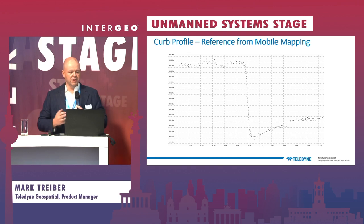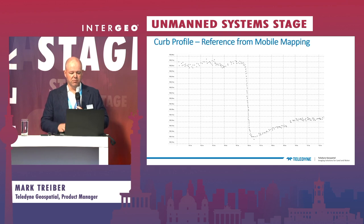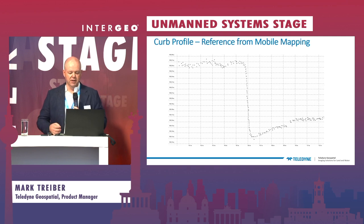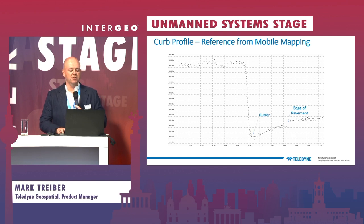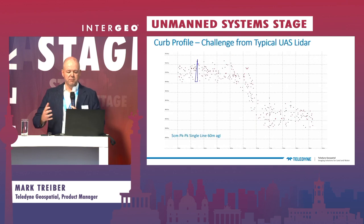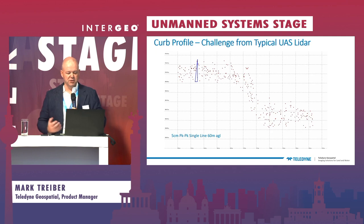One of the things I like to use as a reference, because it's really one of the worst-case scenarios with the highest accuracy requirement, is modeling the curb. Here's an example from mobile mapping data that gives you an idea of the type of accuracy that customers expect. From this you can pick out the edge of the pavement, the gutter, the face of the curb, as well as the back of the curb surface, and then to the left is the grass. From a typical UAS LiDAR, though, this is much harder to pick up — as humans you can tell there's a curb there, but you really can't pick out the exact features. That face of the curb, if you look at the width of those points, is roughly 20 centimeters, so it's really hard to pick up accurate as-built information from that.